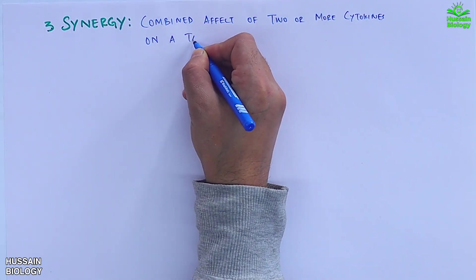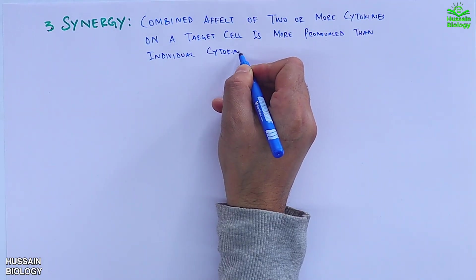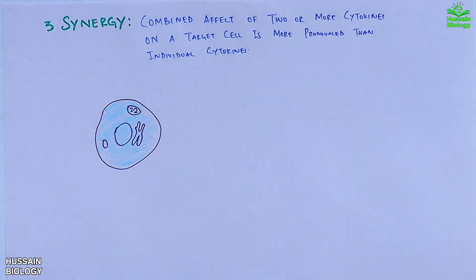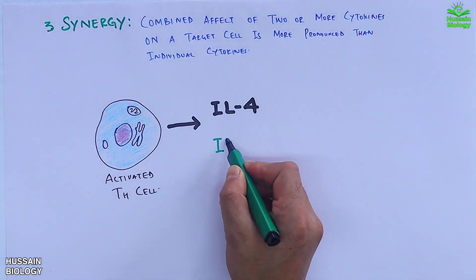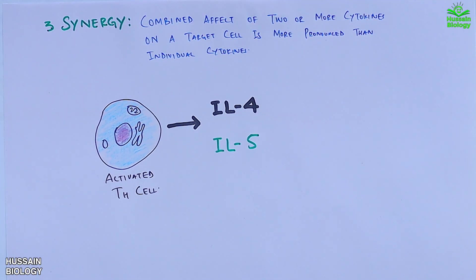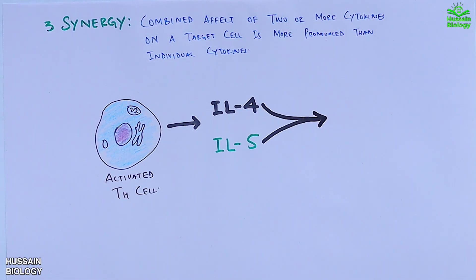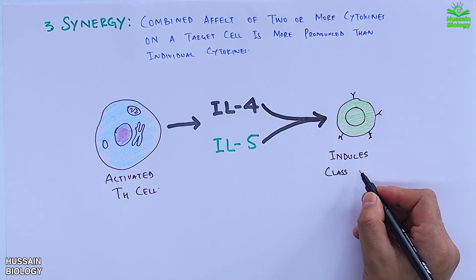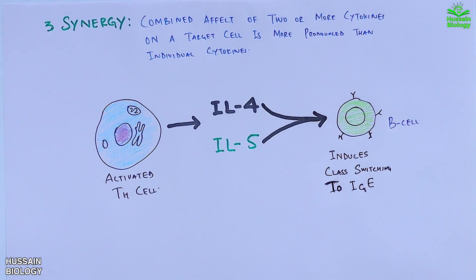The third property is synergy, where the combined effect of two or more cytokine molecules on a target cell is more pronounced than the individual cytokines. In the diagram, the activated T helper cell secretes interleukin-4 and interleukin-5, and both these cytokines target the B cell and induce B cell class switching to IgE antibodies.